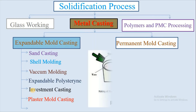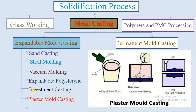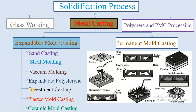The next process is plaster mold casting. It is a metalworking process similar to sand casting except that the mold material is plaster of Paris instead of sand. Like sand casting, plaster mold casting is an expandable mold process. However, it can only be used for non-ferrous materials. Parts typically made by plaster casting include lock components, gears, valves, fittings, tooling, and ornaments.